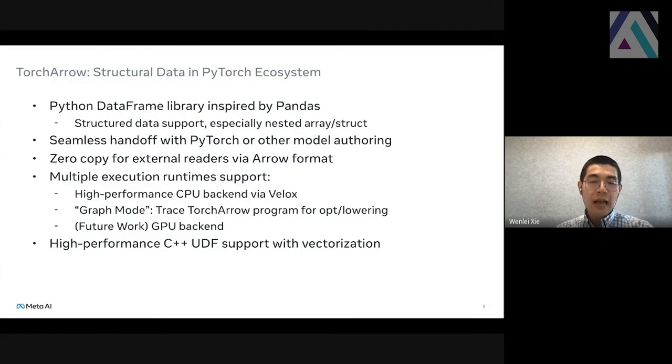Arrow format is becoming quite popular, both in the machine learning and the data processing domain. So we design it with the Arrow in-memory format, which allows zero copy from external readers. One way to think about it, you can use PyArrow.parquet to read it from your data and without any overhead hand it to TorchArrow DataFrame. We do want to have multiple execution runtime support. First, as the very first step, we have a high-performance CPU backend, which is backed by Velox, to support more efficient processing at very large scale in Meta production.